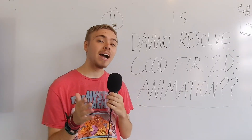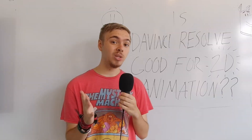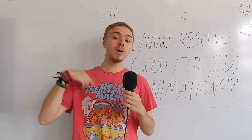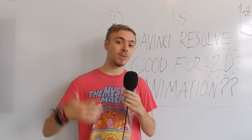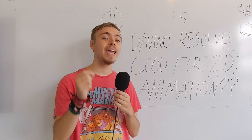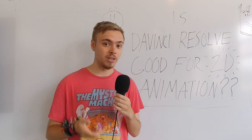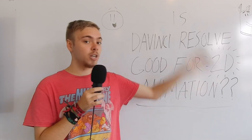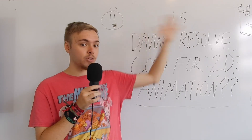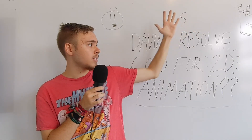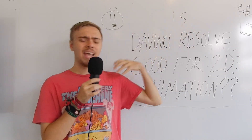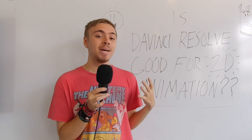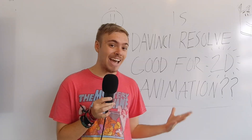So first off, I should probably define what I mean by 2D animation, because there are a lot of different methods to do it. The one you probably think of when I say 2D animation is traditional hand-drawn animation, where every frame of animation you have to draw by hand. So if I wanted to make a character waving, I have to draw the hand here, and here, and here. It takes a lot of time, and I have a lot of respect for it.